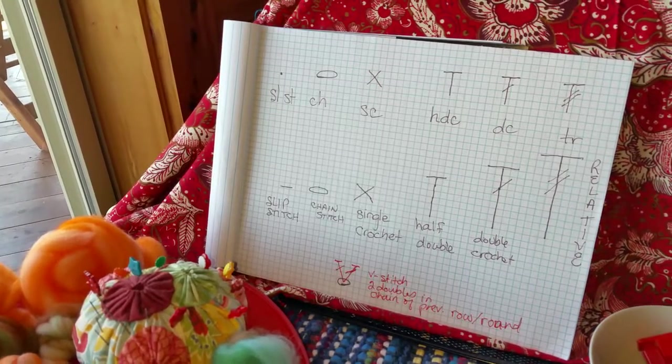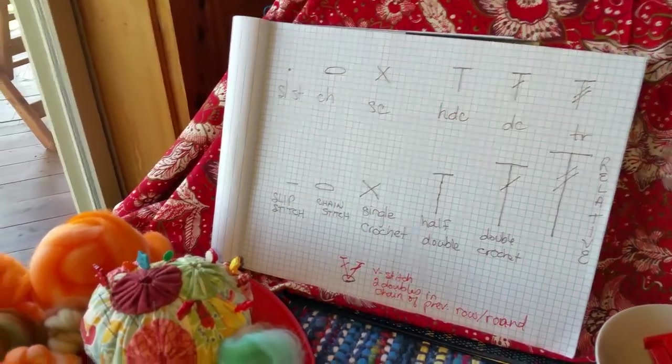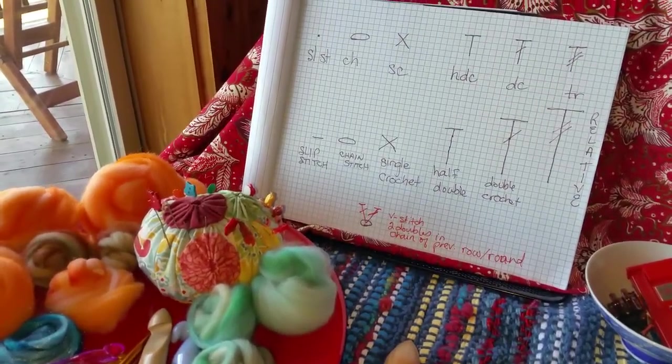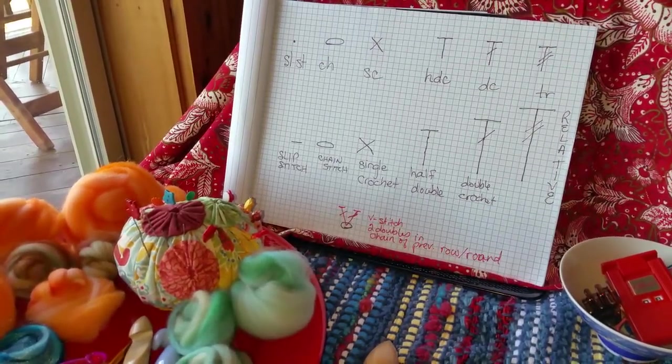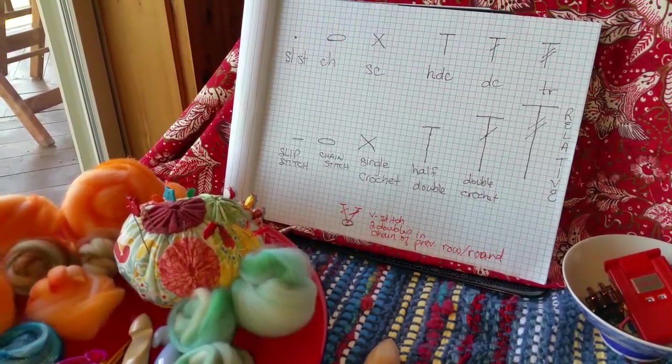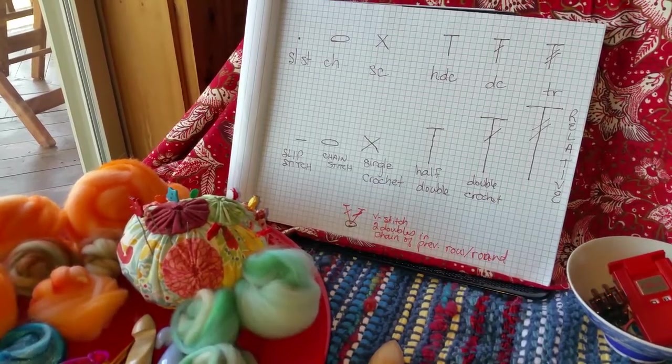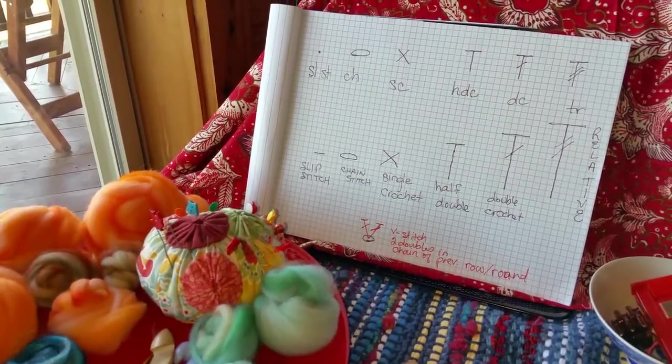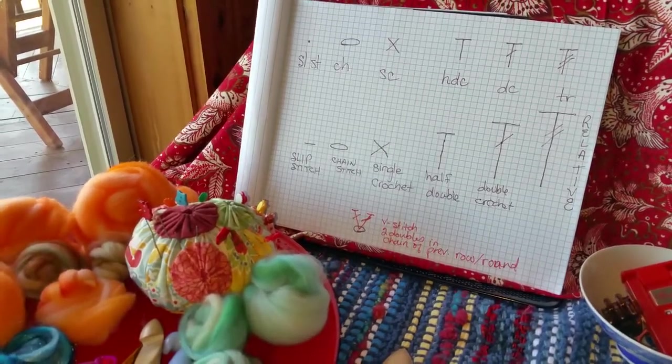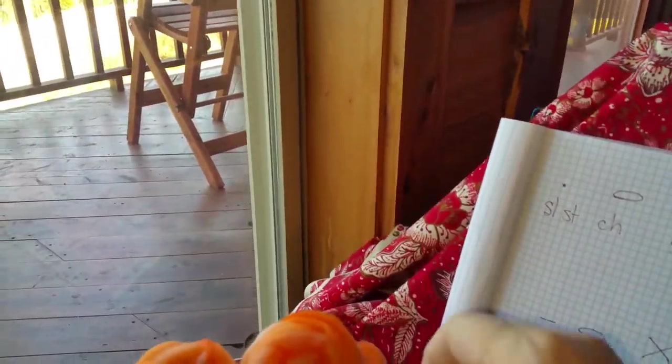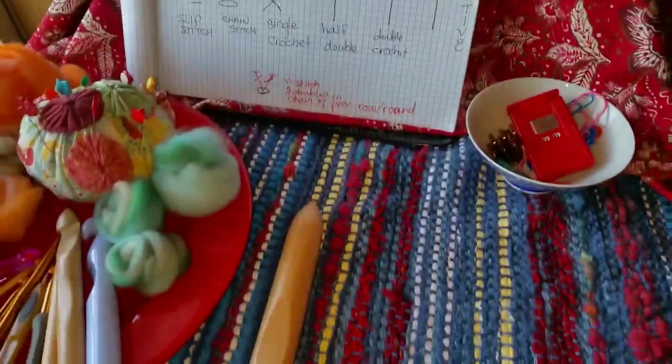So I got some books and there were these long directions that went on and on and it was overwhelming. Things like chain 27, in fourth chain from hook, and then work, and no charts, nothing to look at, and symbols. It was very hard. So when they came out with symbols, that's when I really got into crochet and I love it. The way it works makes total sense to my brain and maybe it will to you if you've been having problems learning crochet.